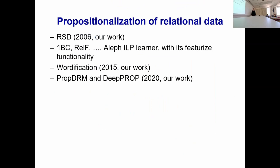In terms of propositionalization of relational databases, we have quite a lot of work. It started in 1991 with the Linus algorithm, then the RSD algorithm for relational subgroup discovery — in collaboration with Philip Zelesny from Czech Technical University. Competitive algorithms were 1BC by Peter Flach, RELF by Czech Technical University, and Aleph — especially for ILP. Aleph is the best ILP learning algorithm, and it also has a featurized facility for transforming data into feature vectors, which we compared against.